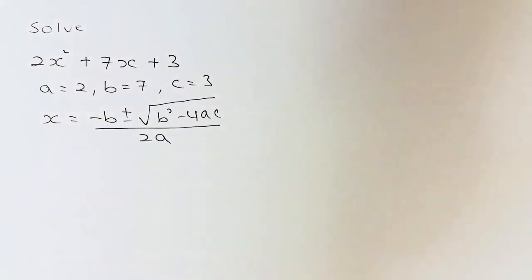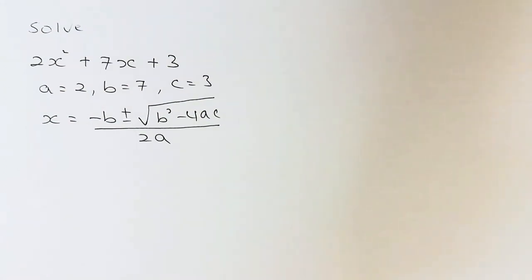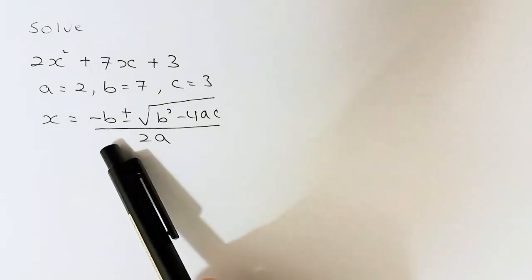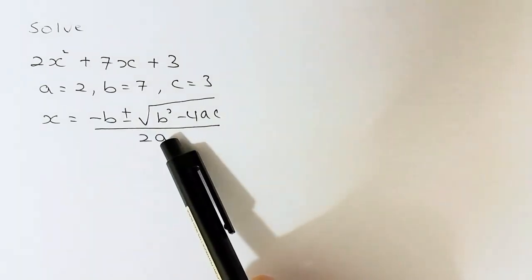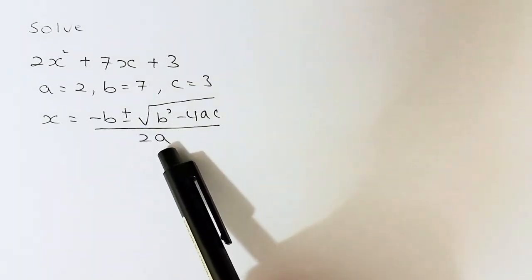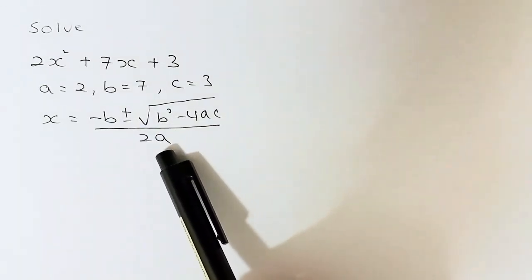In this video, we are going to learn how to solve a quadratic equation using the quadratic formula. The quadratic formula is: minus b plus or minus the square root of b squared minus 4ac, divided by 2a.